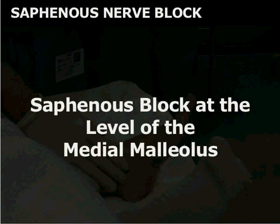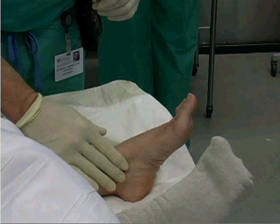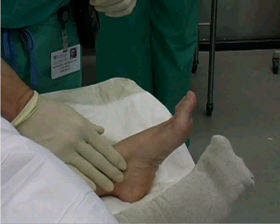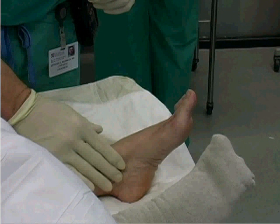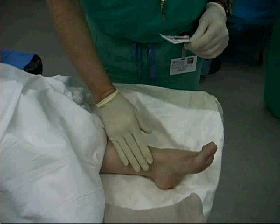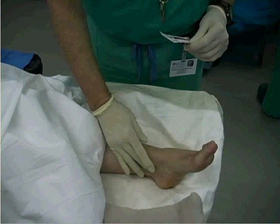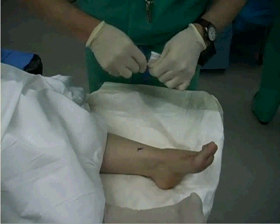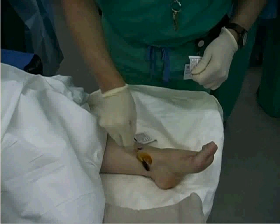When performed at the level of the ankle, the saphenous block is performed as part of a field block. It may be used for foot and ankle surgery. Refer to the ankle block chapter for further detail. The patient should lie in the supine position on the table with the leg and foot flat. Palpate the medial malleolus — this will be your site of needle insertion. Use the povidone-iodine solution to cleanse the skin overlying the medial malleolus circumferentially, and allow the prep solution to dry.